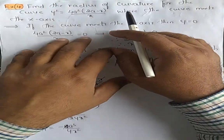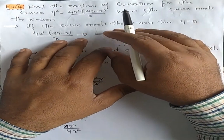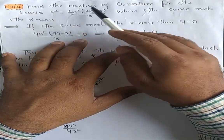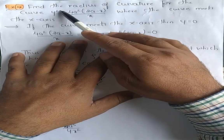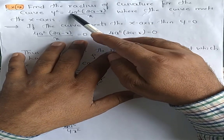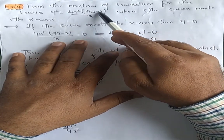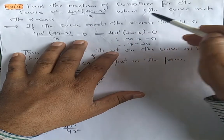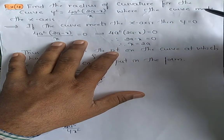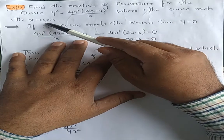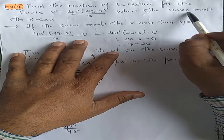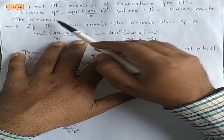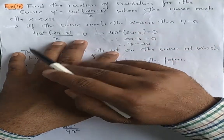Dear students, let us move to another example of radius of curvature. Find the radius of curvature for the curve y² = 4a²·(2a − x)/x, where the curve meets the x-axis.